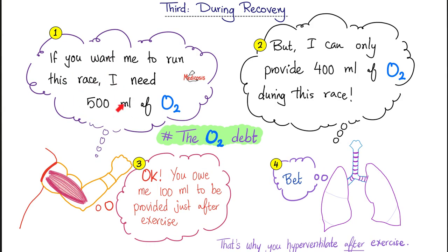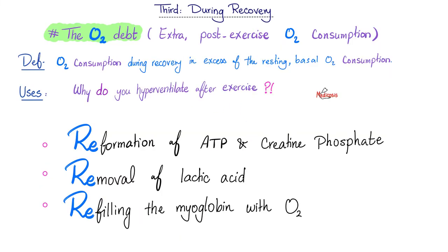During exercise, suppose the muscle needs 500 ml of oxygen but the lungs can only supply 400 ml. The muscle allows a shortfall, and the lungs owe 100 ml of oxygen debt to be repaid after exercise. Oxygen debt is the post-exercise extra oxygen consumption — needed to reform ATP and creatine phosphate, remove lactic acid, and refill myoglobin with oxygen. That's why even after finishing exercise you continue to hyperventilate — the lungs are paying off their debt.